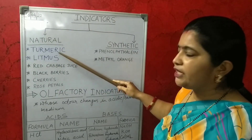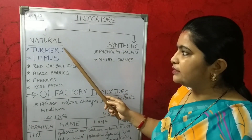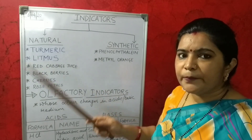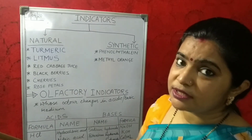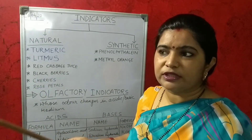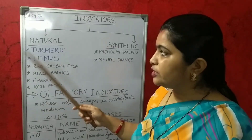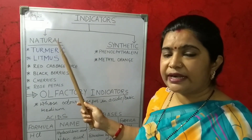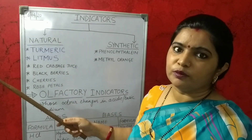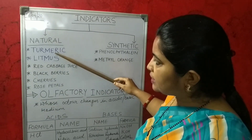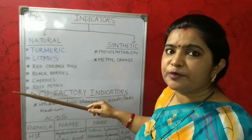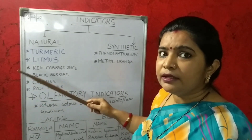We can see that turmeric changes its color when it comes in contact with a base. The base here is in the form of detergent which we use with clothes. When we use detergent on clothes, we can see that the color of the stain changes to reddish brown. This is how these indicators change colors and indicate the presence of acids and bases.